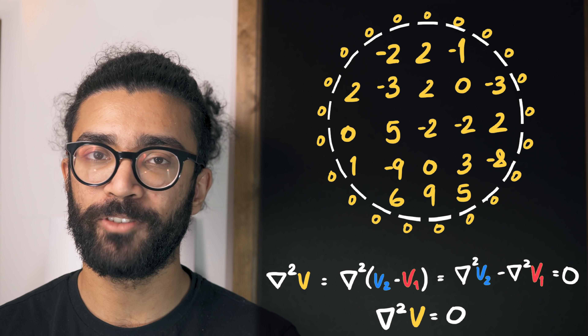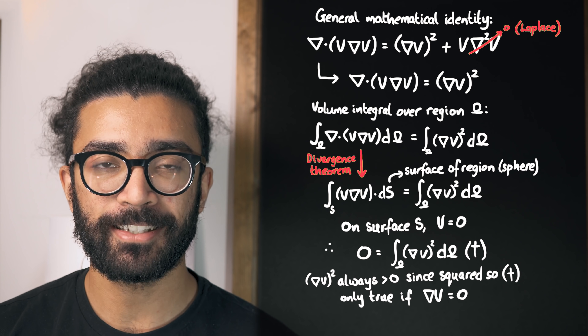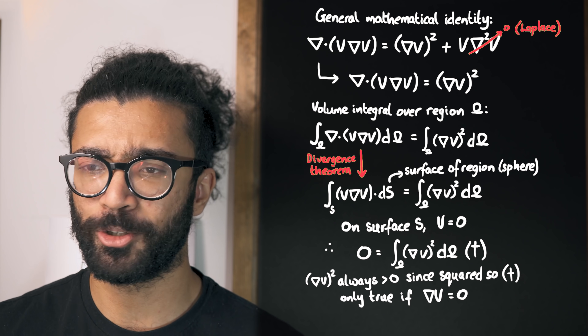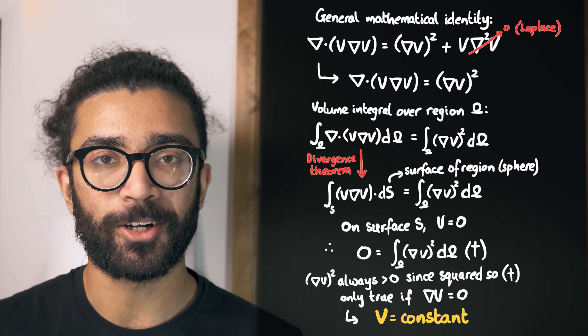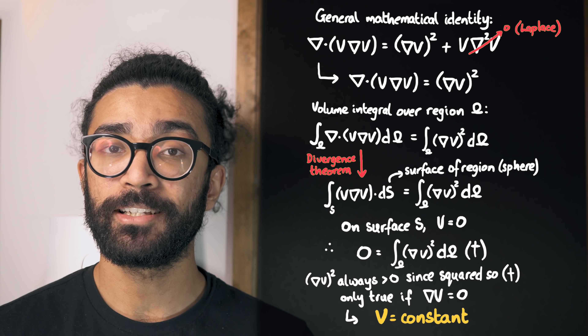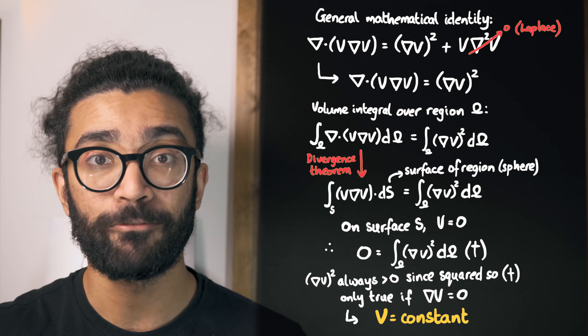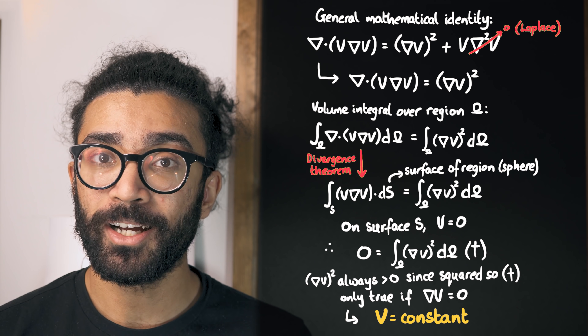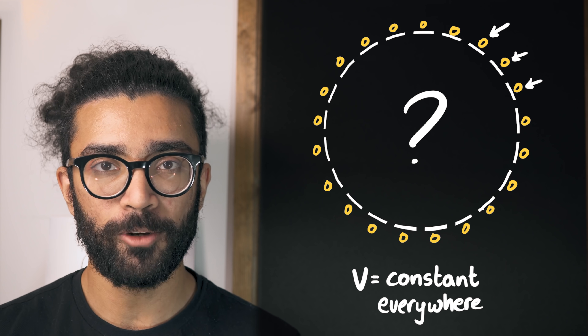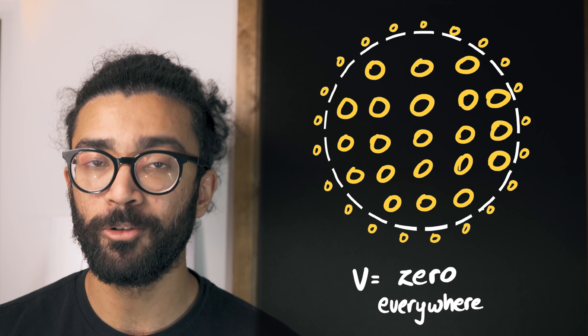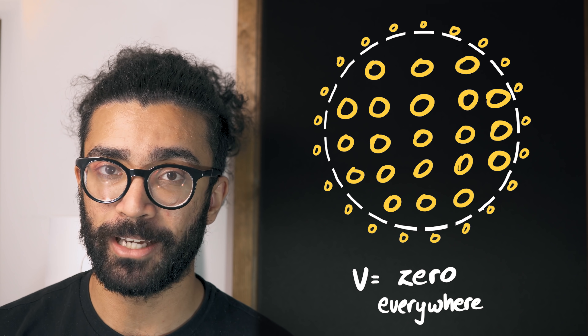Using some general mathematical identities as well as vector calculus — stuff that applies to all kinds of vectors and scalars in general — we can find out that V must be a constant: the same at every single point in the region of space we're considering. But remember, V was zero on the boundary, because V2 and V1 were the same as each other on the boundary. So if V must be a constant based on our mathematics, and V is zero on the boundary, then V must be zero everywhere — at least everywhere in the region of space we're considering.